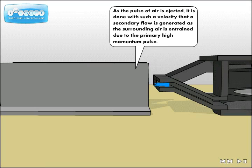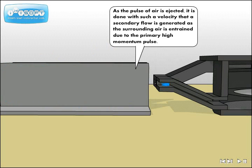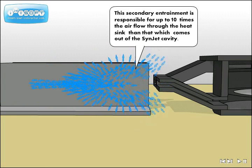As the pulse of air is ejected, it is done with such a velocity that a secondary flow is generated as the surrounding air is entrained due to the primary high momentum pulse. This secondary entrainment is responsible for up to ten times the airflow through the heat sink than that which comes out of the SynJet cavity.